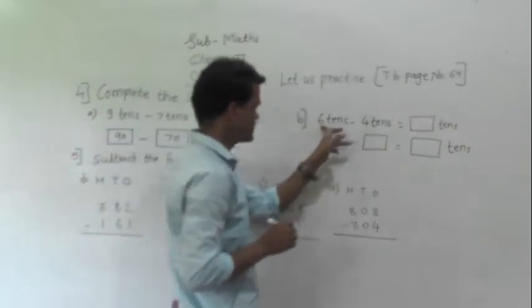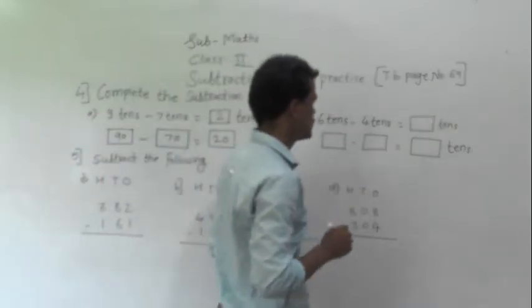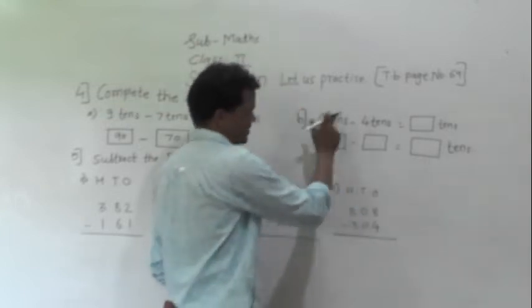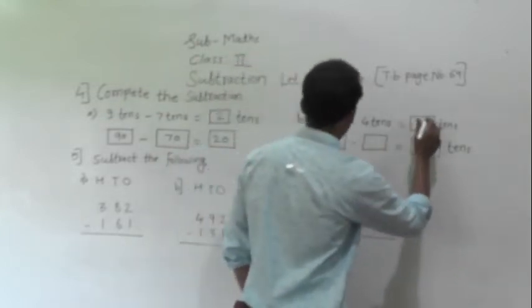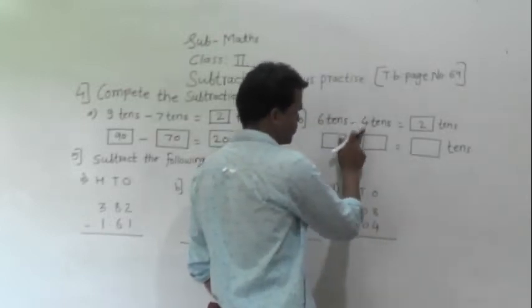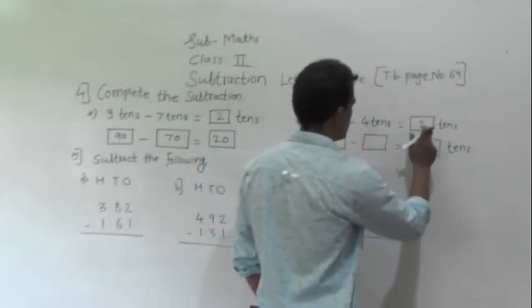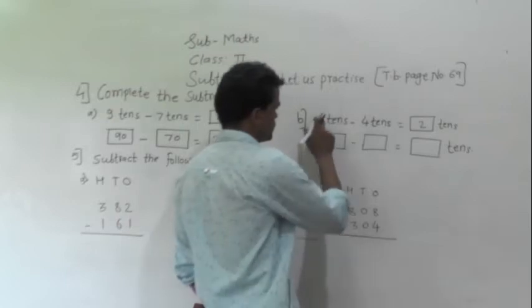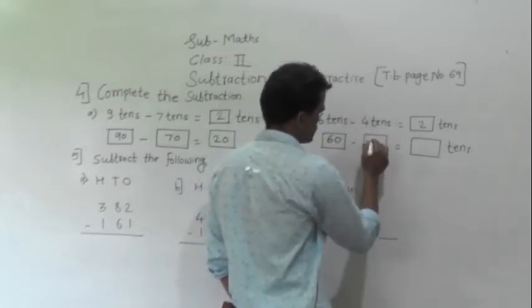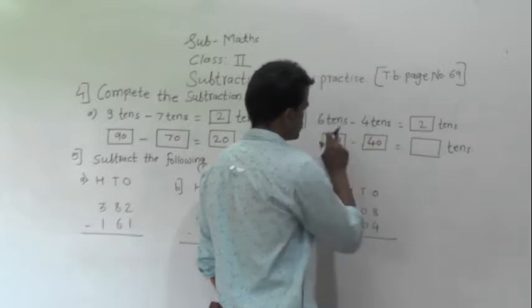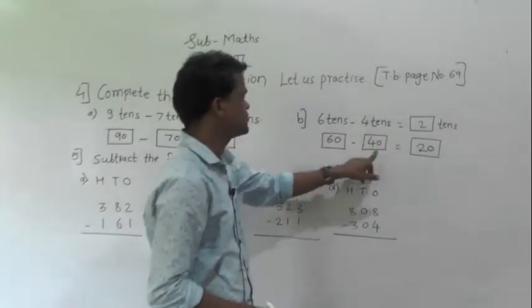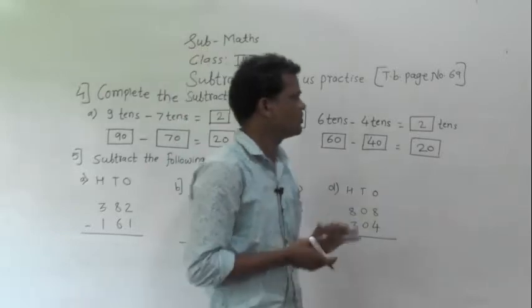Next example: 6 tens minus 4 tens is equal to blank tens. So 6 minus 4 is 2, therefore 6 tens minus 4 tens is equal to 2 tens. 6 tens means 60, 4 tens means 40, so 60 minus 40 is equal to 20.